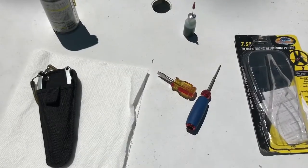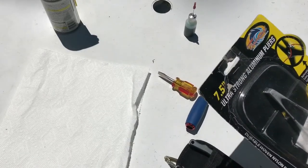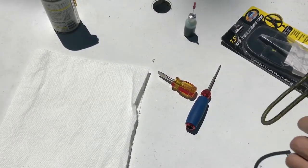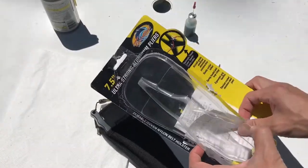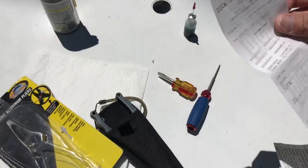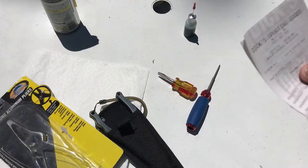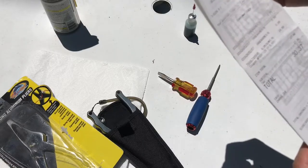Hey, what's up guys, I'm back with another review video. This time it's a Tsunami 7.5 inch ultra strong aluminum pliers. I got these back at Dick's Sporting Goods in December 2012, paid like $25 plus tax for them.